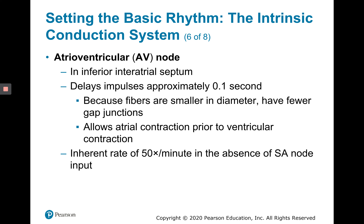The AV node, or atrioventricular node, is located in the inferior interatrial septum, usually depicted on the right side of the heart. It delays impulses approximately 0.1 seconds. For that reason, we call the AV node the gatekeeper of the heart. This delay ensures that the atria have time to contract completely before the ventricles contract — a 0.1 second delay allows this to happen. The inherent rate of the AV node is 50 beats per minute, so in the absence of the SA node, the heart rate would be 50 bpm.